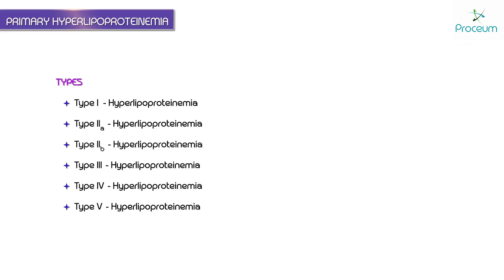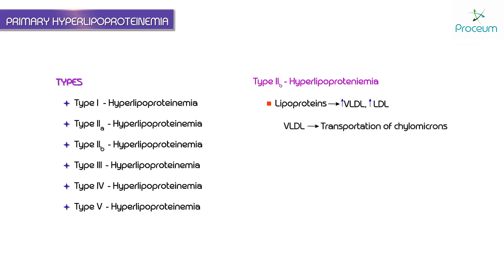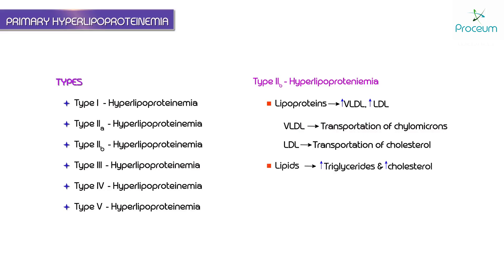In type 2b hyperlipoproteinemia, the lipoproteins which are increased are both VLDL — very low density lipoprotein — and LDL. VLDL is required for transportation of triglycerides, whereas LDL is required for transportation of cholesterol.